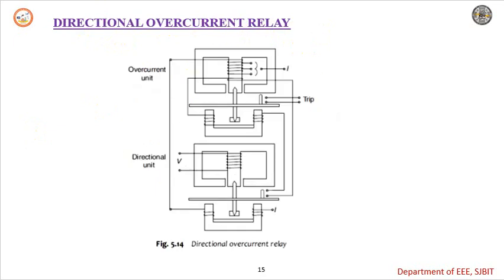If we combine the directional feature with the overcurrent relay, we get the directional overcurrent relay. The overcurrent relay operates whenever the current exceeds the preset value. So if the current exceeds the preset value and the power is also flowing in the opposite direction to normal, then we use this kind of relay — the directional overcurrent relay.